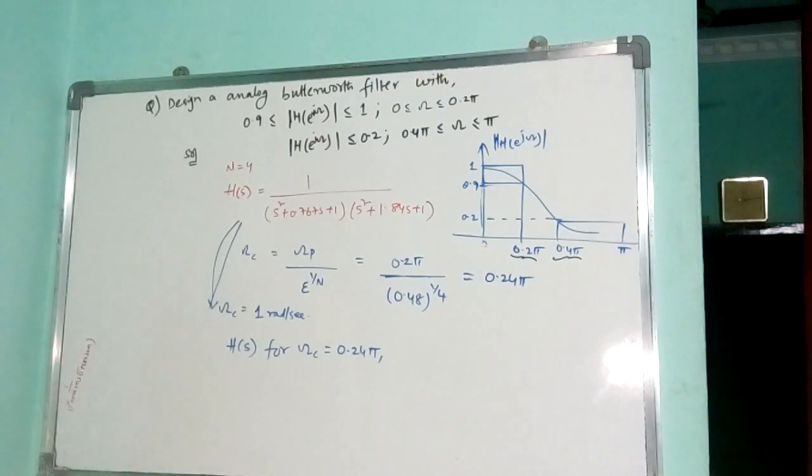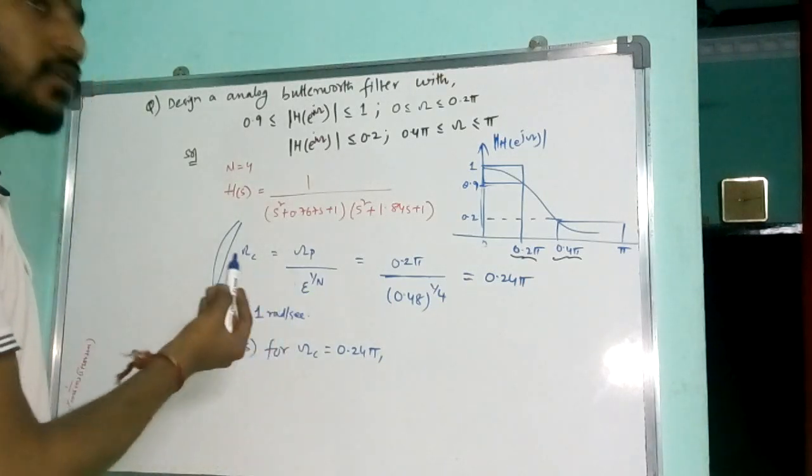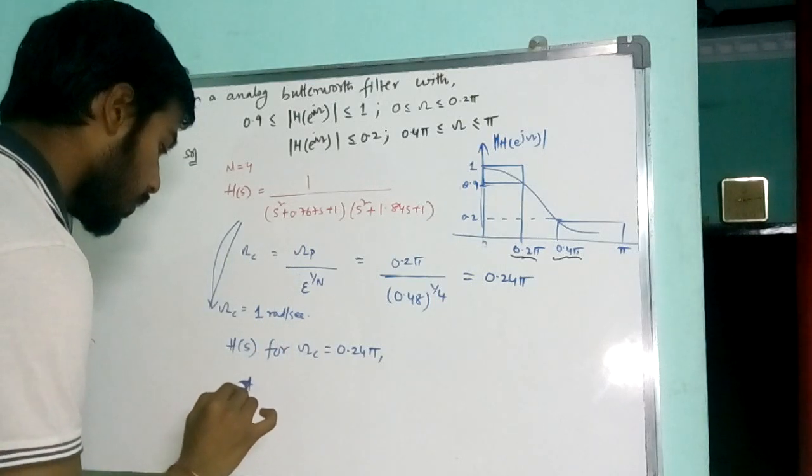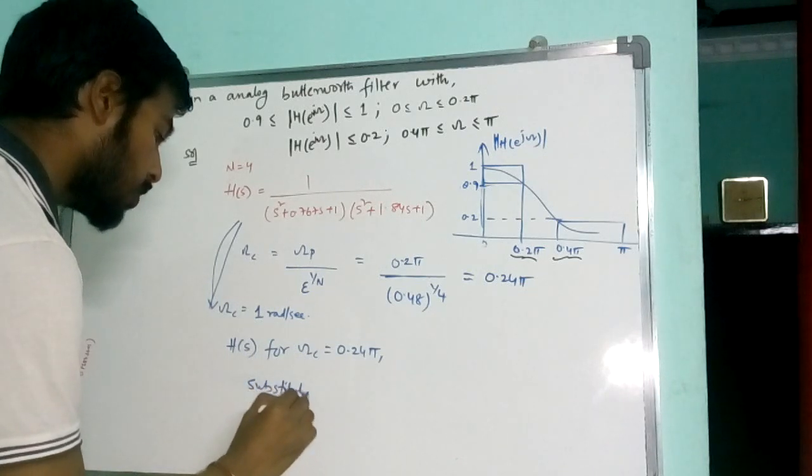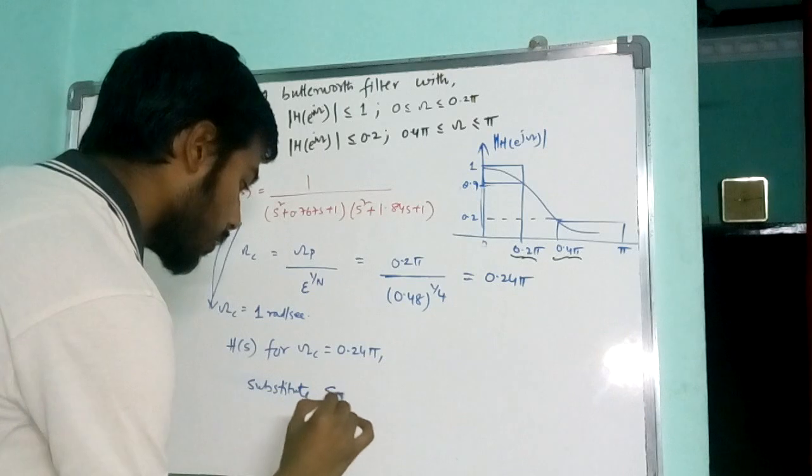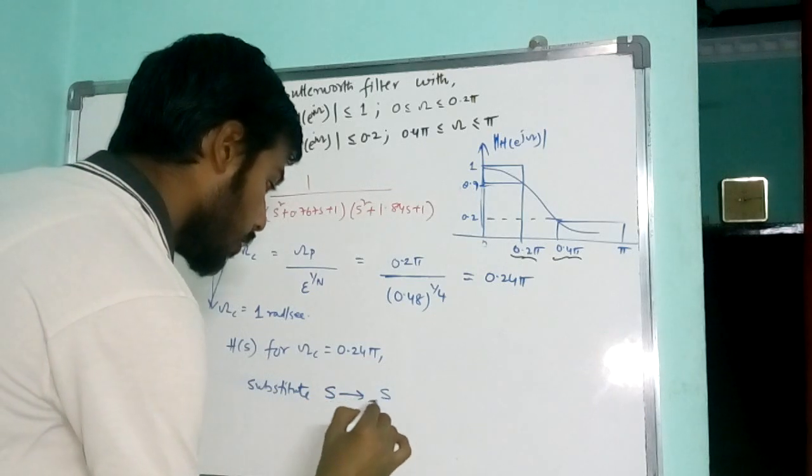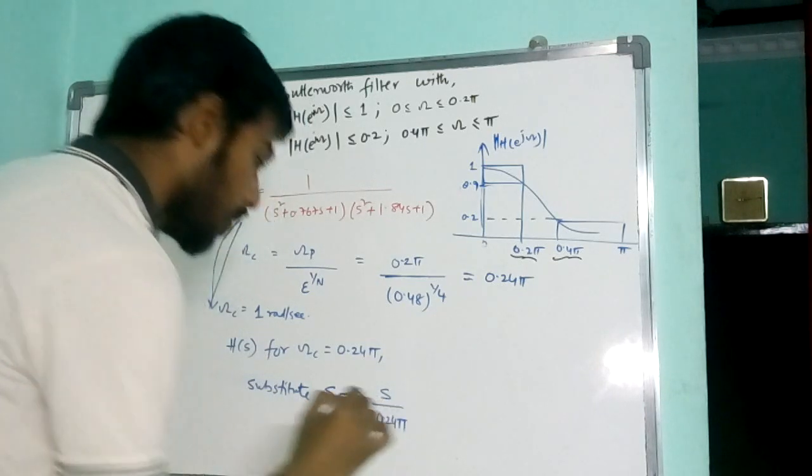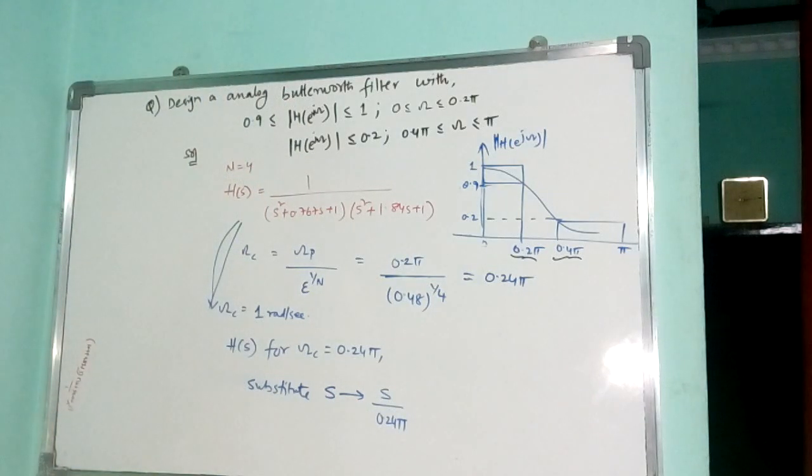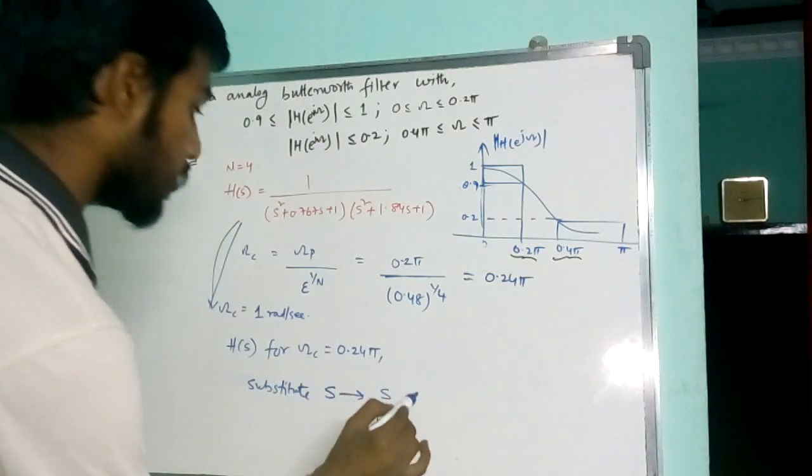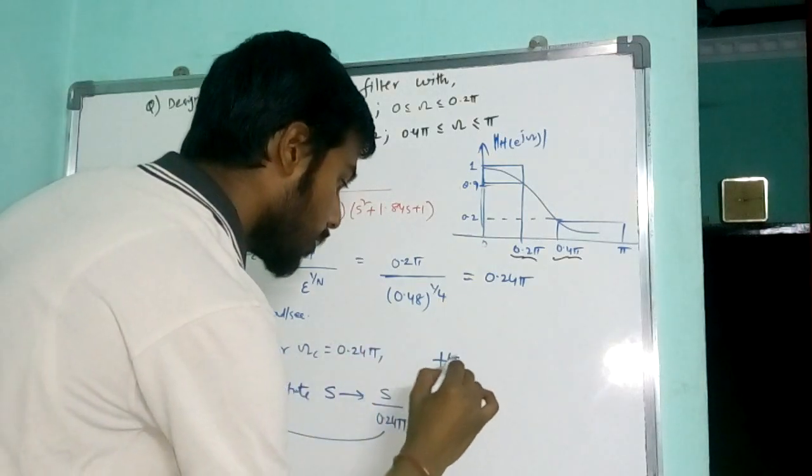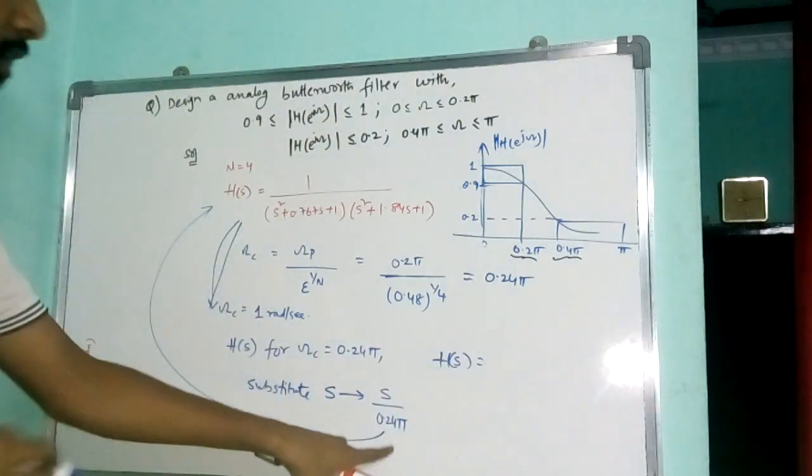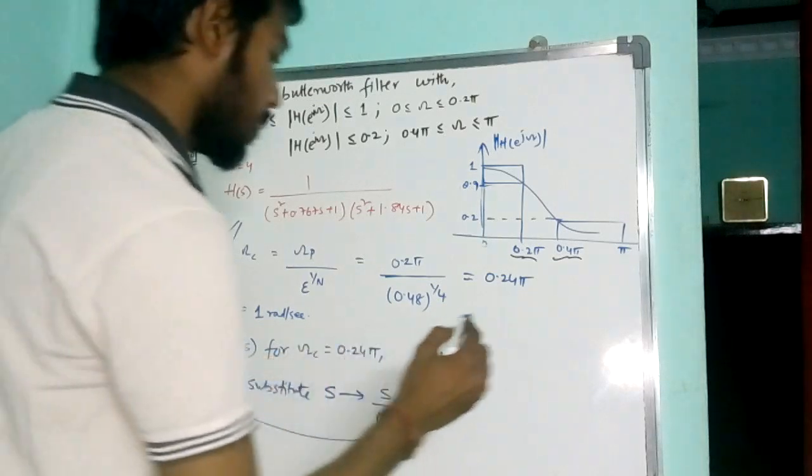For that, what we need to do is substitute s by s divided by 0.245. Within this equation, so that we get the final h of s which will be in terms of s by 0.245 for this.